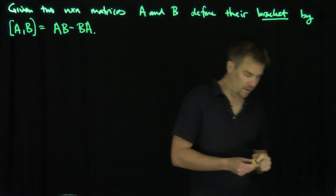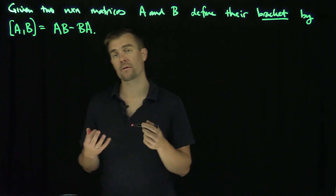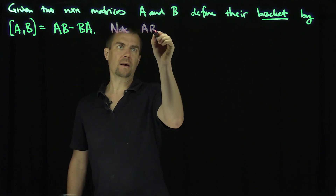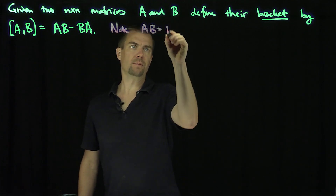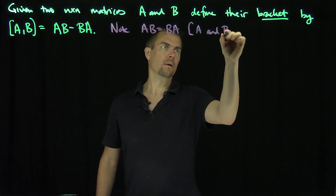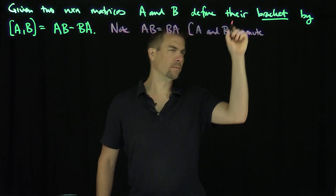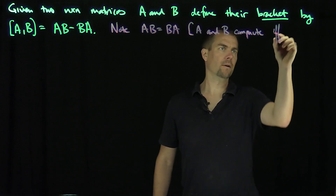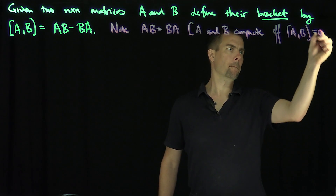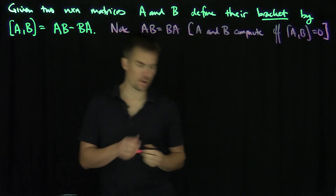One thing we can immediately notice is that this is defined in such a way that A and B commute with each other if and only if their bracket is zero. So note: AB equals BA, namely A and B commute, if and only if their bracket is zero. That's a trivial consequence of the definition.